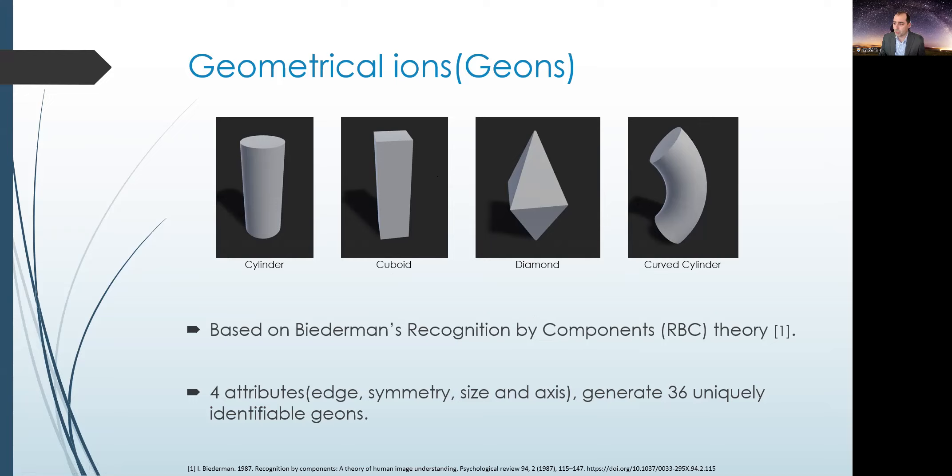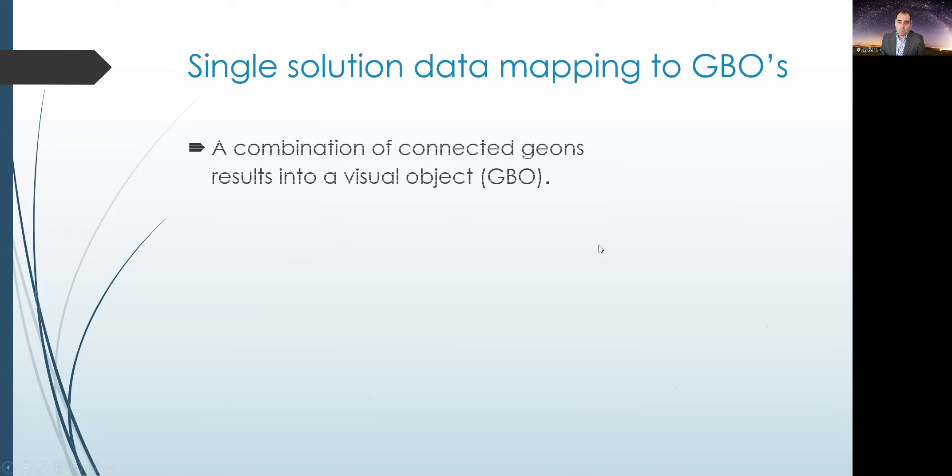All these three - cylinder, cuboid and diamond - have a straight axis except the curved cylinder. So a combination of all these attributes will create these 36 unique Geons. The unique combination of these Geons and the positional relation to each other creates a visual object, the GBO. The representation of this object would be a structural description of the components that form that object, i.e. Geons, and their relationship to each other. These relationships include the relative size of the components, orientation, and the locus of their attachment.